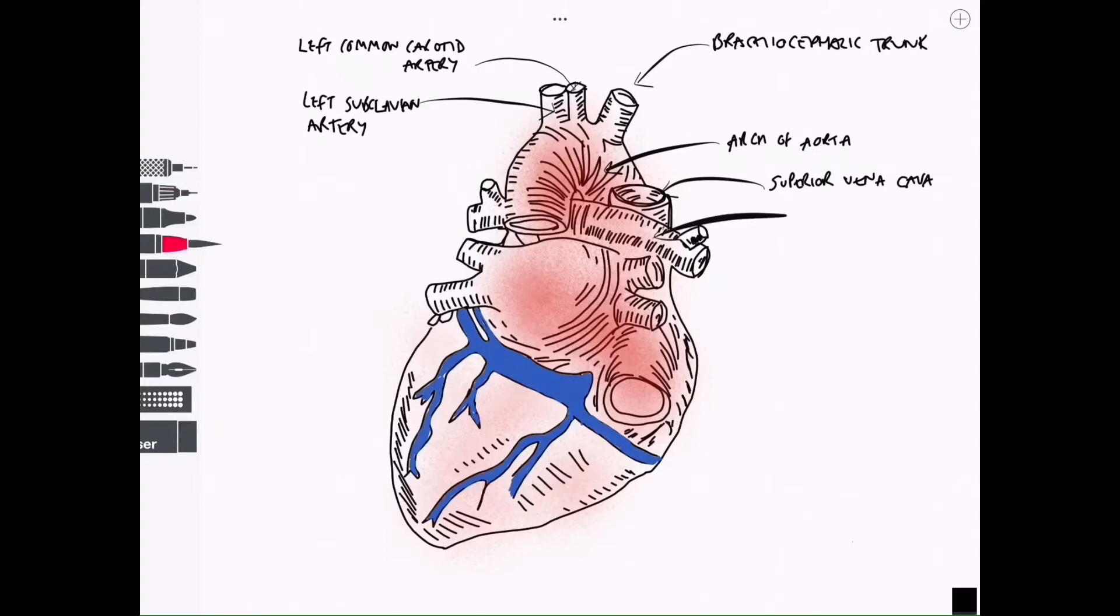Sitting just inferior to that we have the right pulmonary artery. Inferior to that we have the right superior and inferior pulmonary veins, and the best way to see those draining into the left atrium is of course from a posterior view.